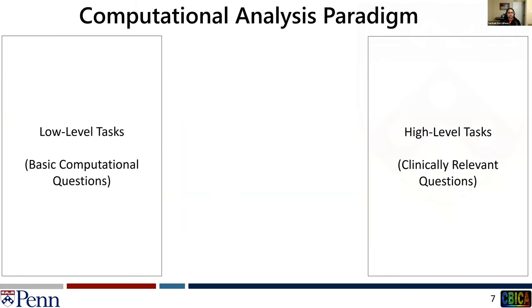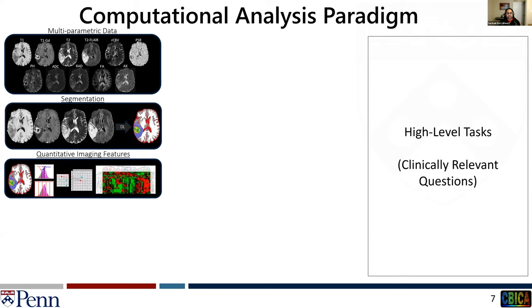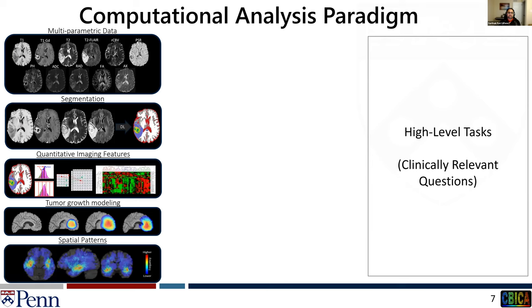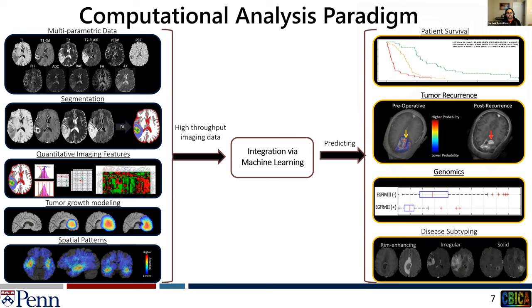Here I would like to encapsulate the paradigm of computational analysis that the field is following, where various low-level tasks — such as image registration for in-tandem analysis of multi-parametric data, tumor segmentation, quantitative feature extraction, biophysical growth modeling, and creation of parametric maps — produce high-throughput medical imaging data. Integrated via machine learning, these can answer clinically relevant questions such as prediction of patient survival, tumor recurrence, molecular characteristics, and unsupervised data-driven subtyping of diseases.